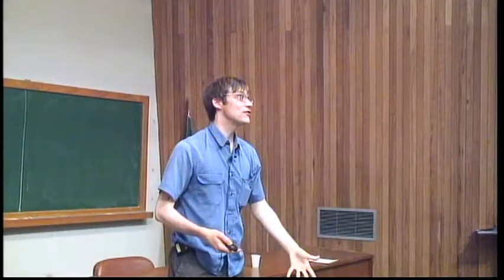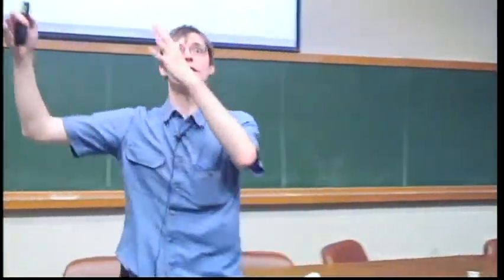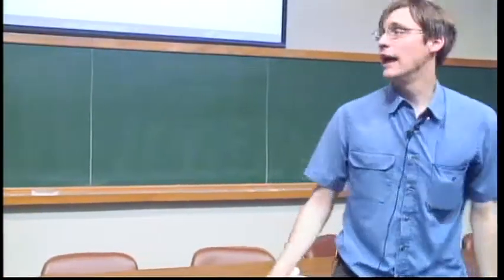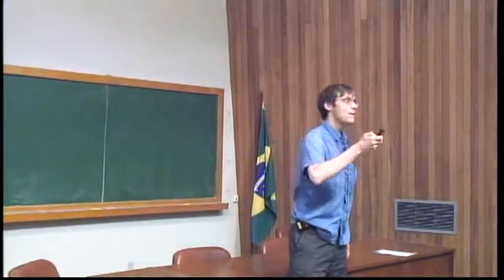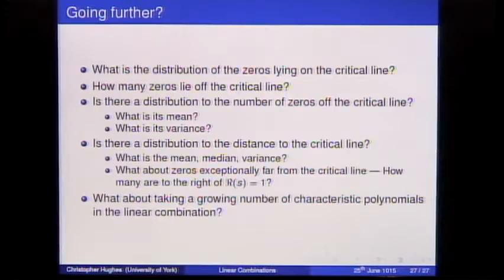Moving from one sub-interval to the next, the carrier wave changes but we still have random matrix statistics for the zero distribution, and we lower-bound over all sub-intervals. Adding everything up, all error terms nicely cancel and we end up with the result: with very high probability, a lower bound of n − o(n) zeros lie on the unit circle. Since this is a degree-n polynomial, 100% asymptotically lie on the unit circle.